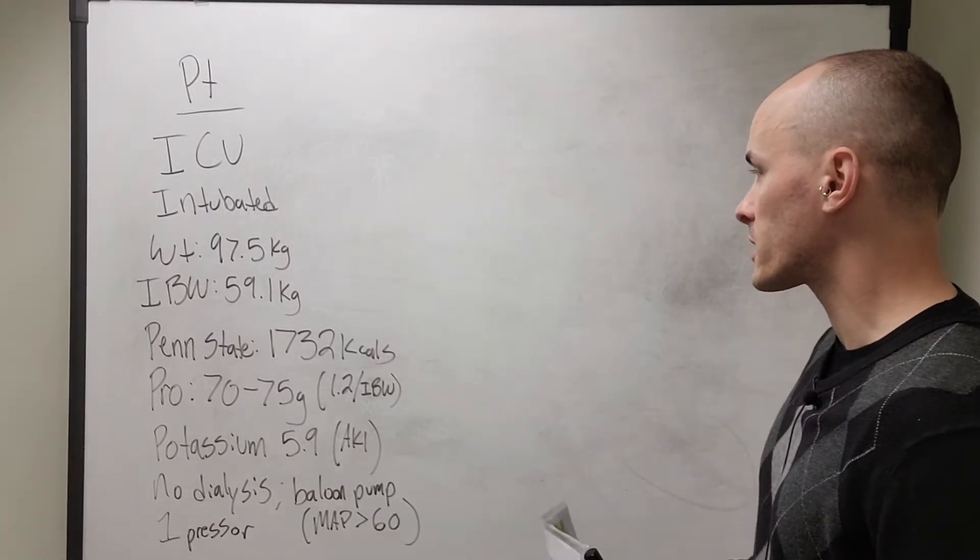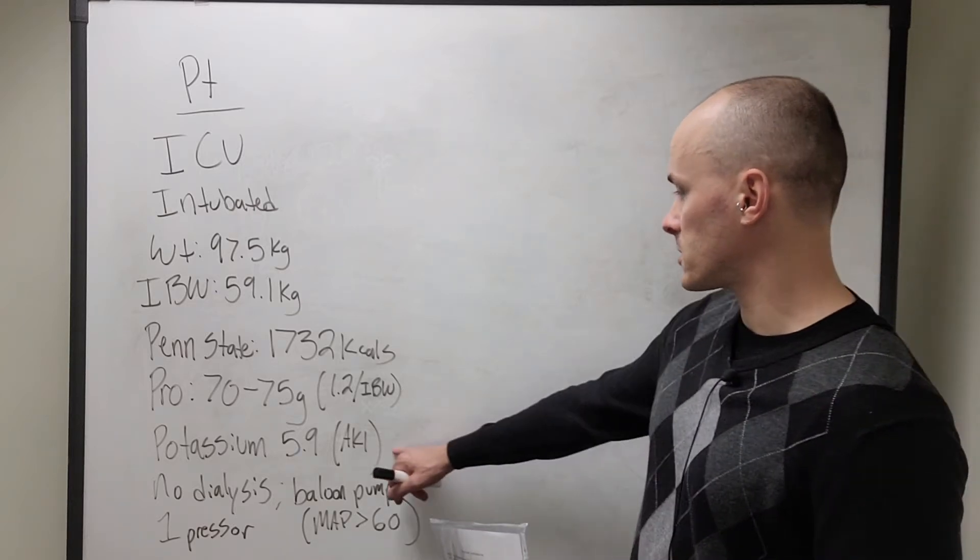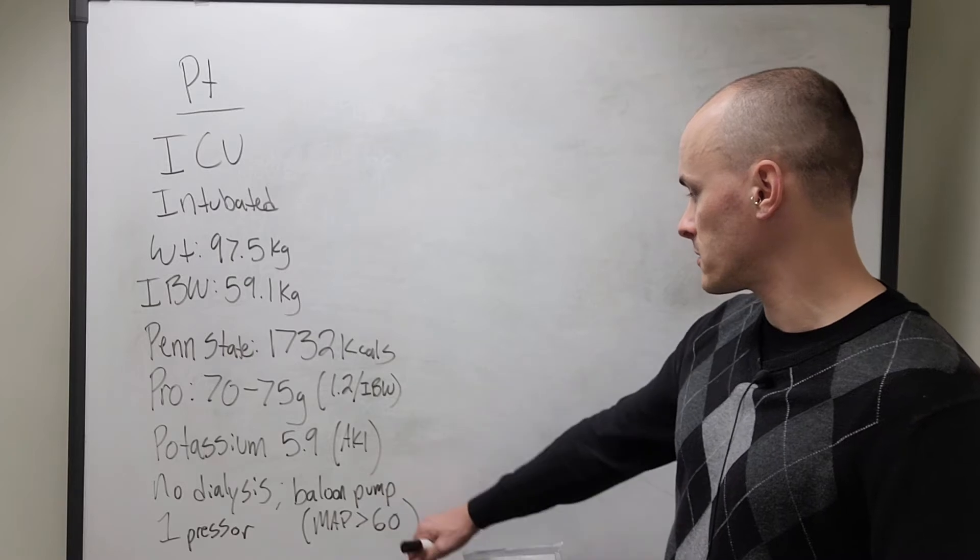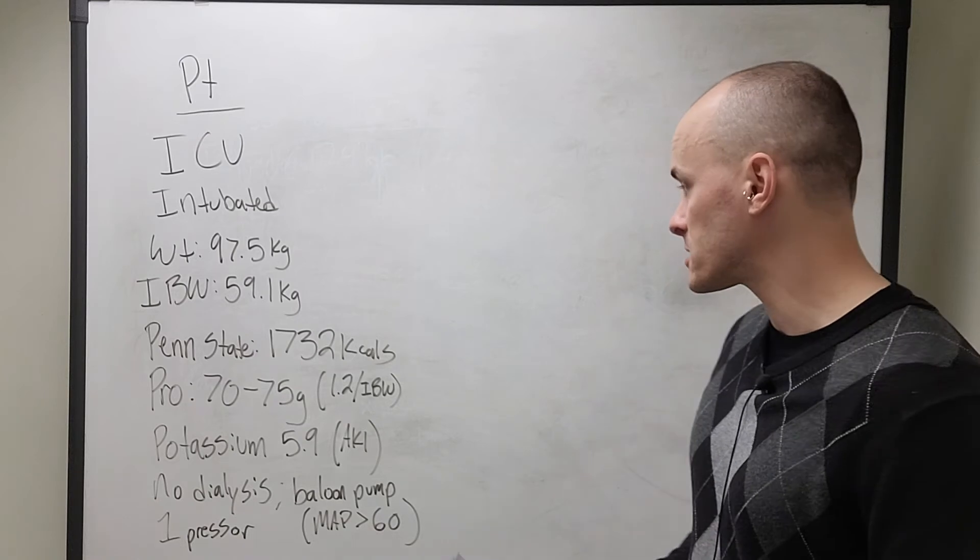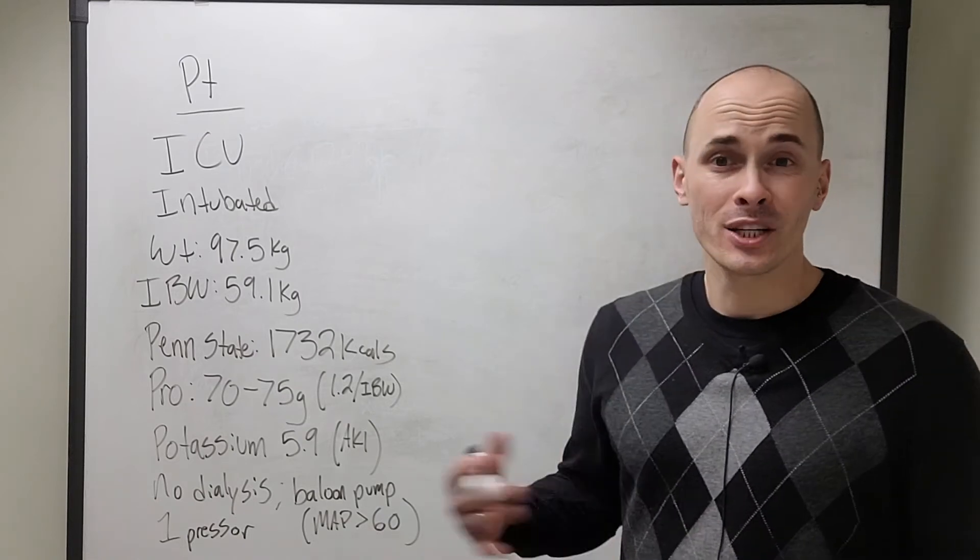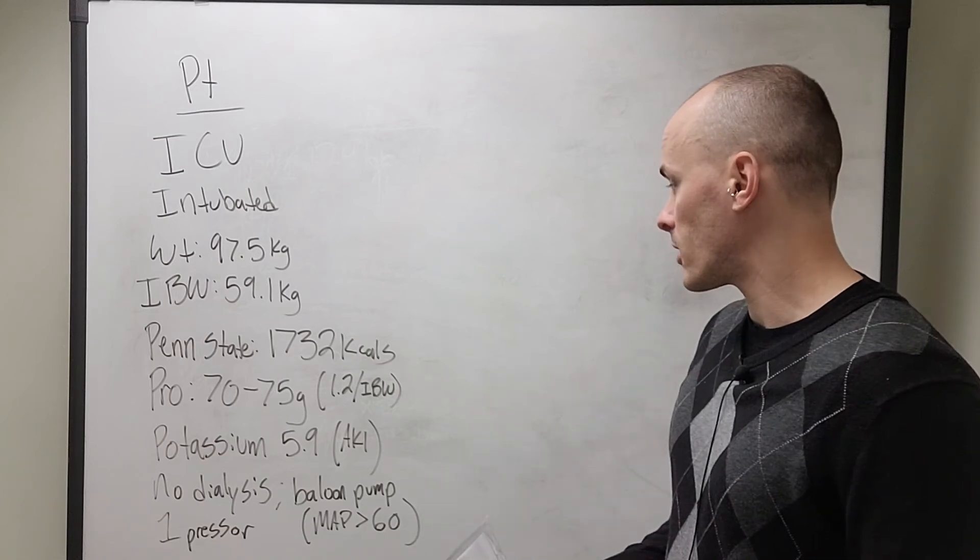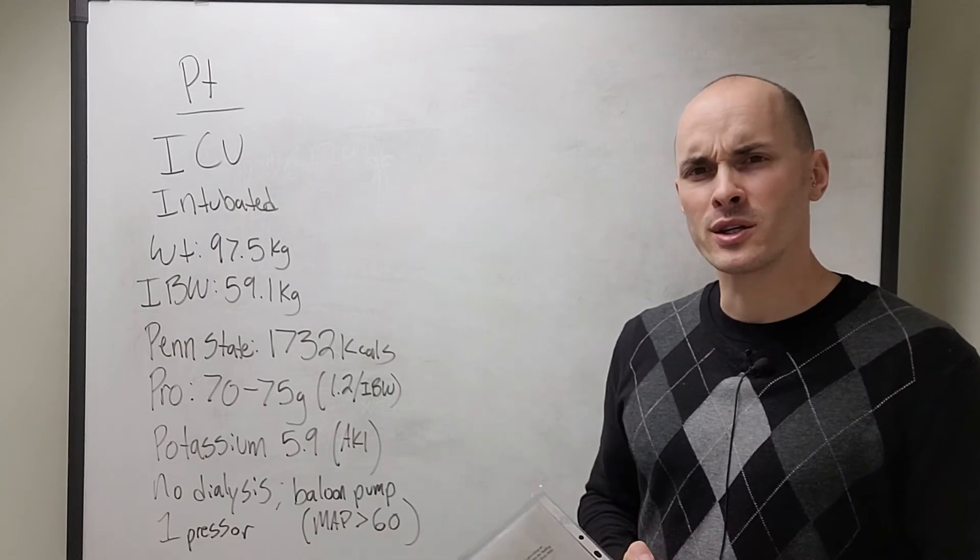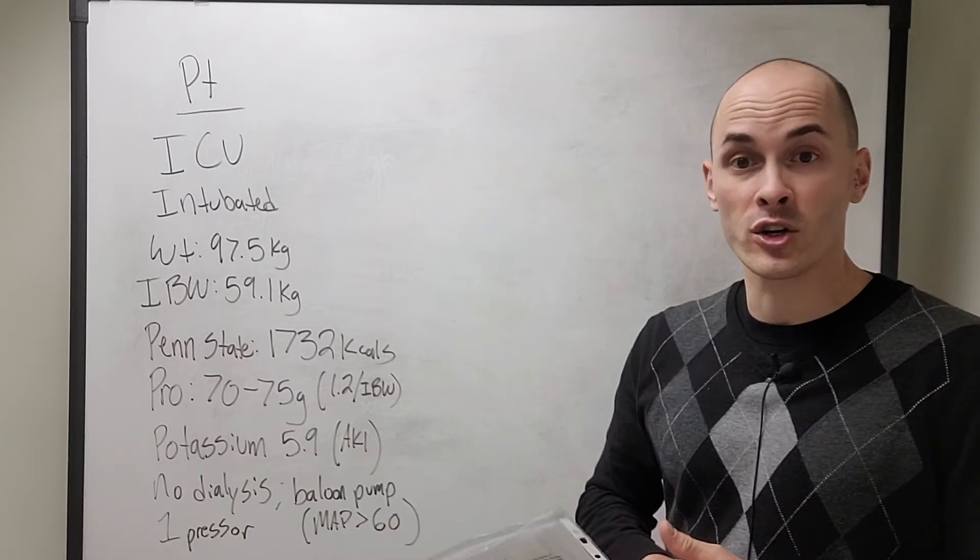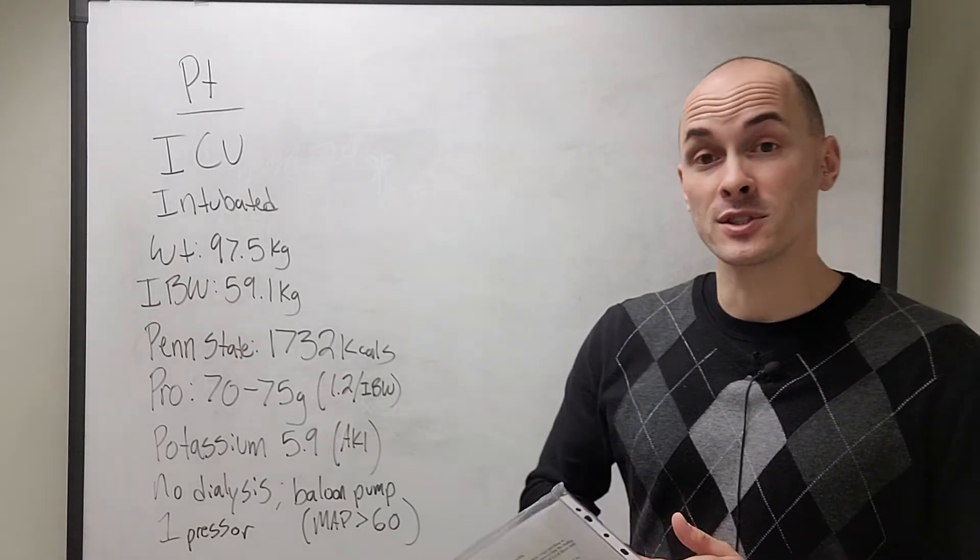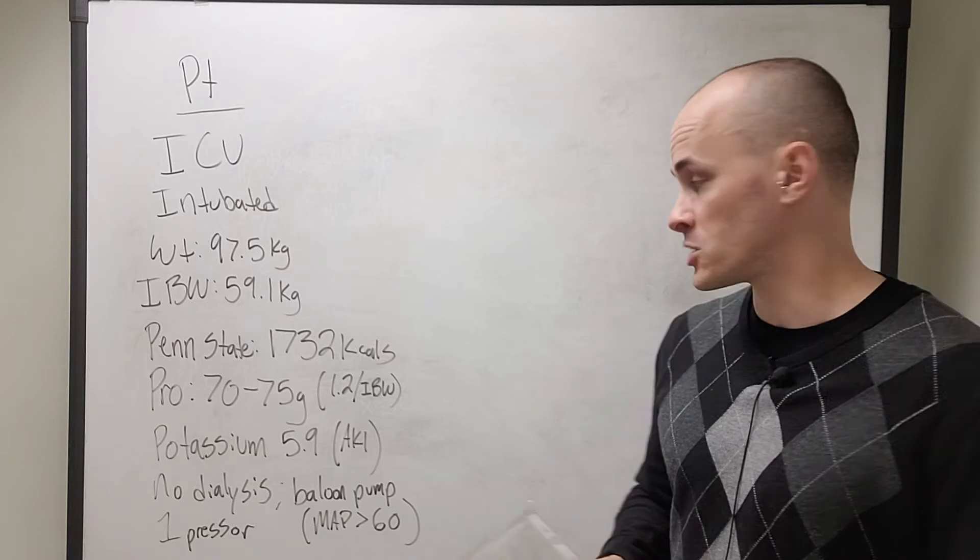Looking at a patient like this, the one thing that concerns me here is this potassium is a little elevated. They're not currently on dialysis, but they're not sure if they're going to need dialysis. So the question is, do we use a renal specific formula or not? I've decided with this patient, I'm probably not going to use a renal specific formula. They're not in kidney failure currently. Their potassium is trending down, and it is not in the setting of end stage renal disease.